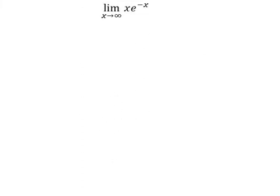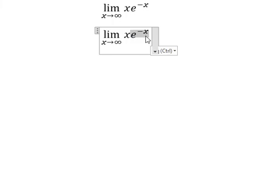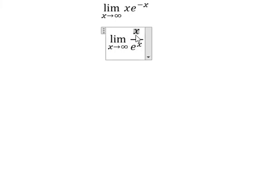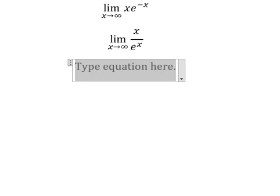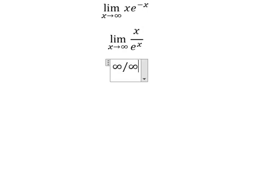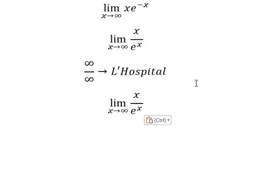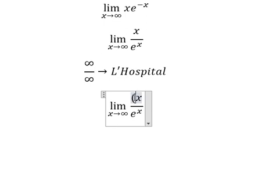For question number two, I will look at x over e to the power of x. We see that when x approaches positive infinity, the numerator goes to positive infinity and the denominator also goes to positive infinity. So we have positive infinity over positive infinity — we can use L'Hôpital's rule.